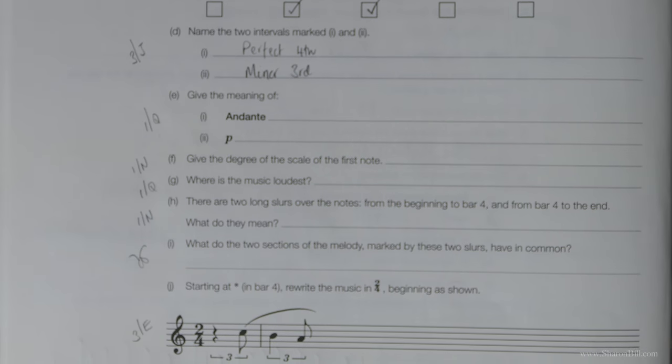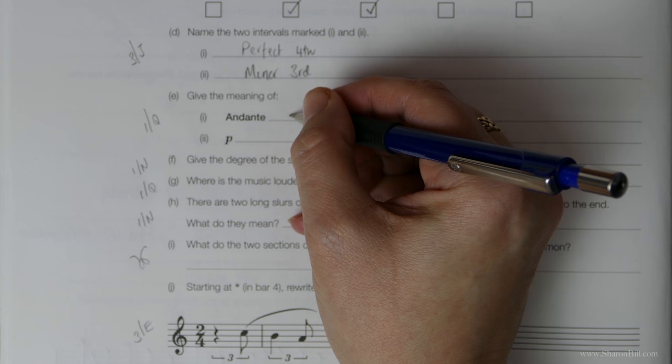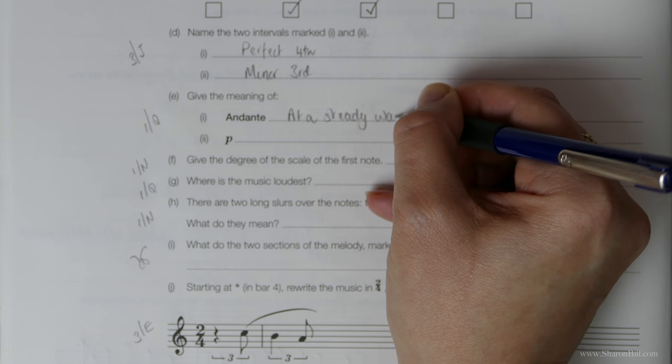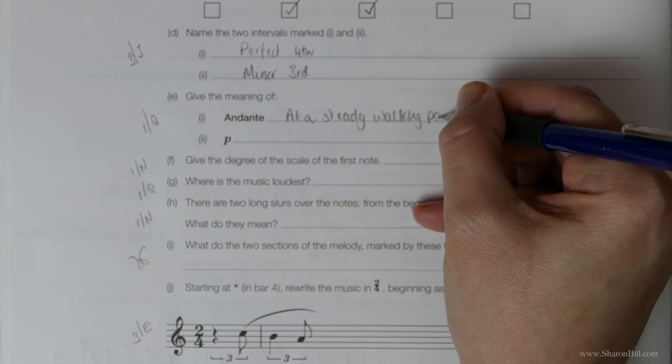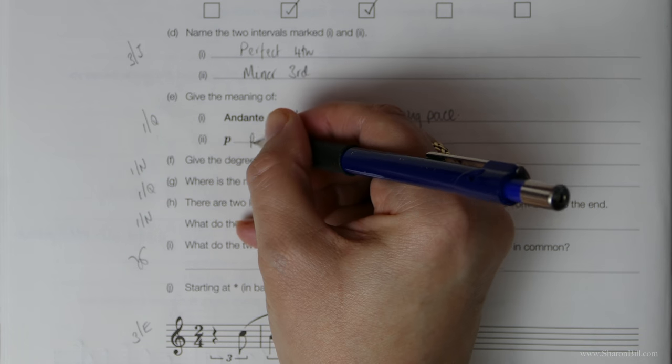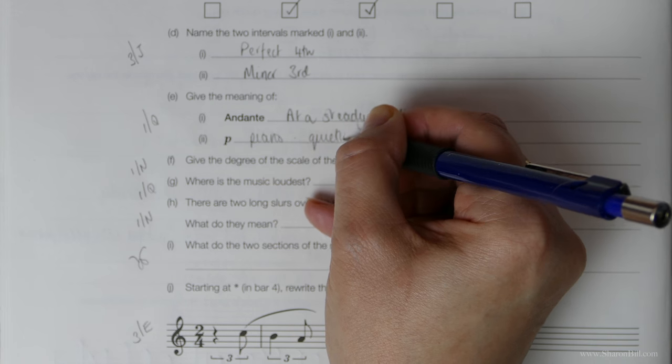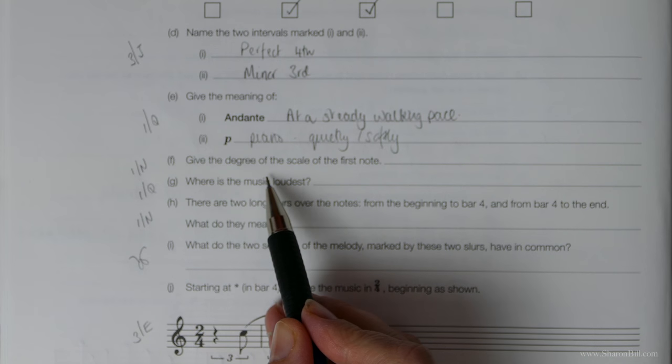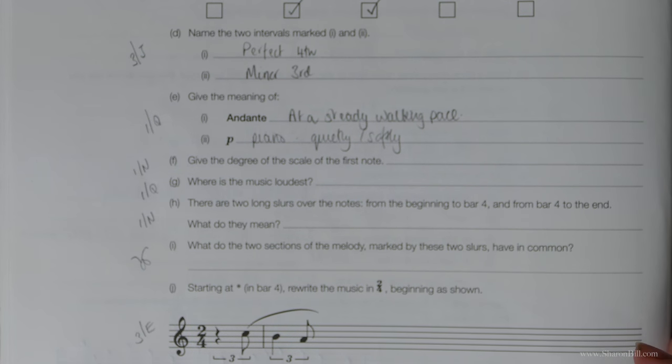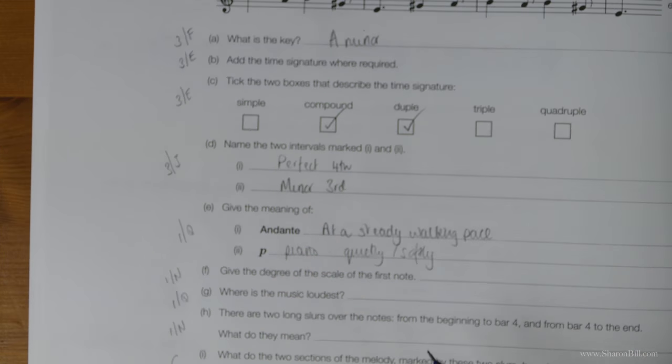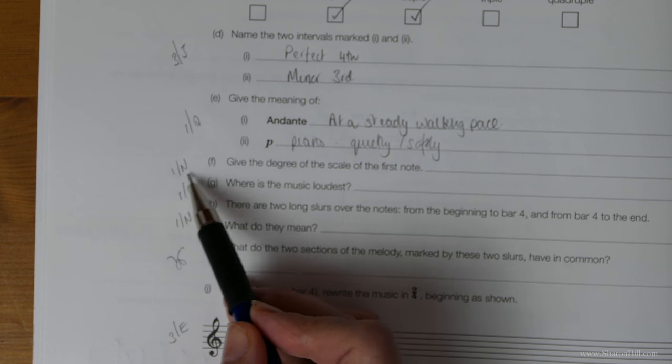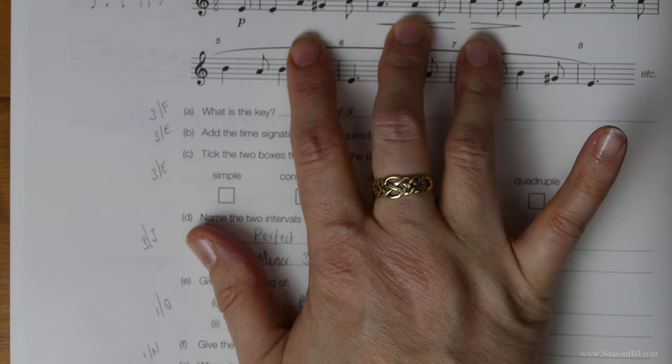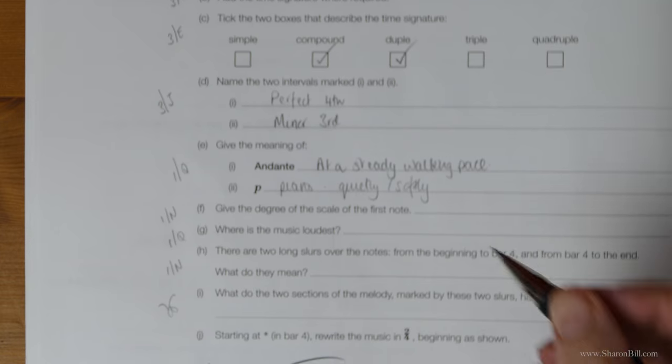Give the meaning of these terms next. Andante we first came across in grade 1 and it's at a steady walking pace. P is short for piano, which means quietly or softly you could say. Give the degree of the scale of the first note. So we need to know that we're in the key of A minor and then degrees of the scale is first discussed in grade 1 N. So if A is our first, A, B, C, D, E is our fifth. And so it's the fifth.